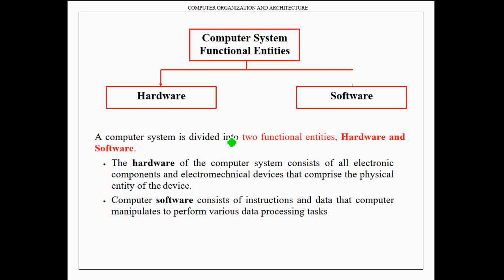A computer system is divided into two functional entities: hardware and software. The hardware of the computer system consists of all electronic components and electro-mechanical devices that comprise the physical entity of the device. Whereas computer software consists of instructions and data that the computer manipulates to perform various data processing tasks.